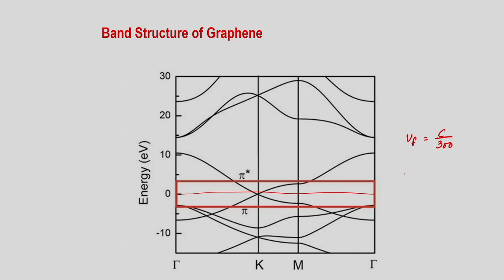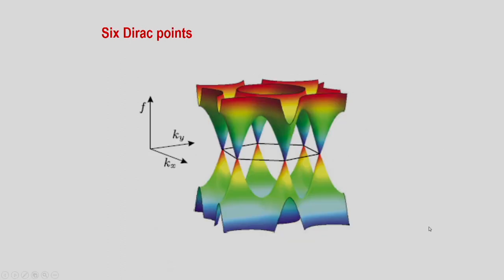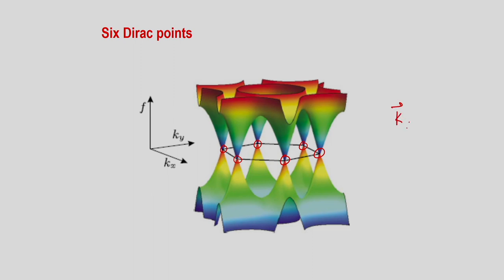This velocity corresponds to the Fermi velocity of electrons in most metals. There are six Dirac points whose coordinates have been found. These six points are not all independent — they are related by adding or subtracting reciprocal lattice vectors. Only two are independent; the rest can be generated from them. These independent points are called the K and K-prime points, known as the Dirac points. The name comes from the fact that the dispersion is Dirac-like: massless and linear.